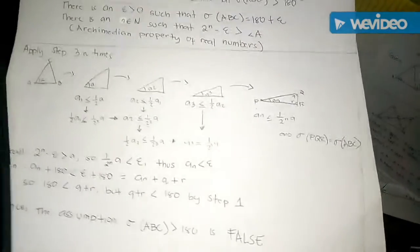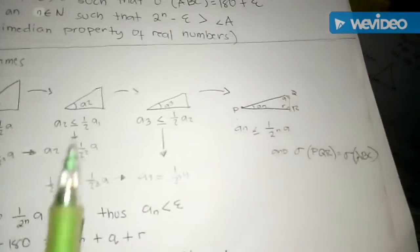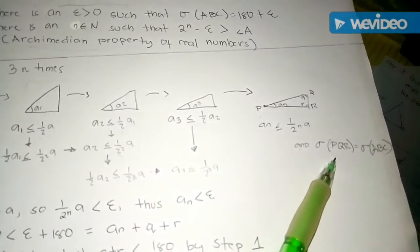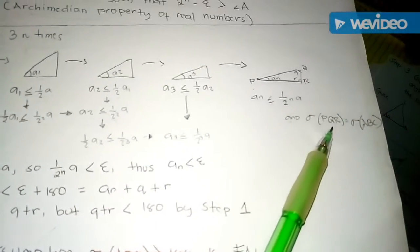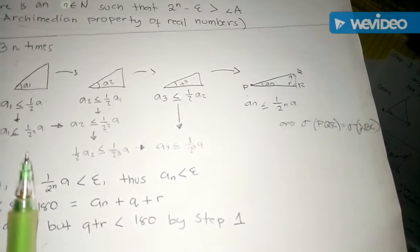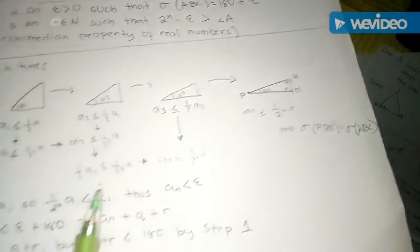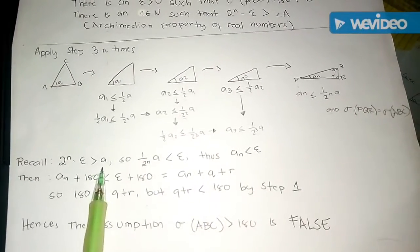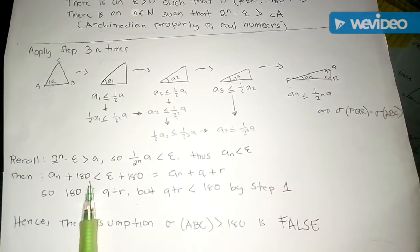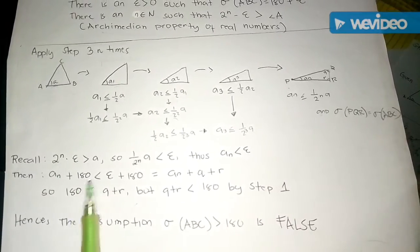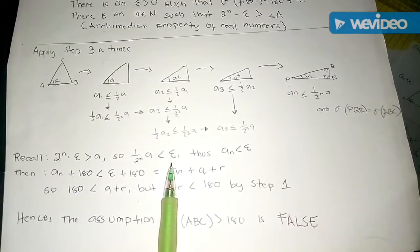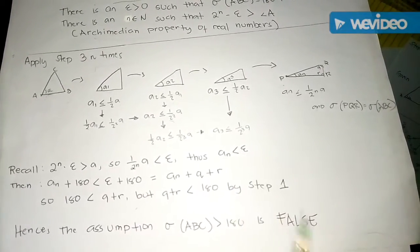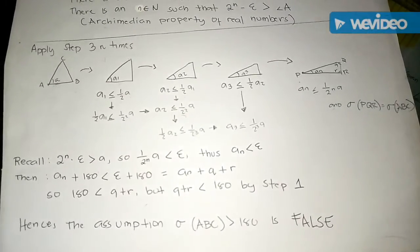Triangle ABC had angle sum 180 + ε, so triangle PQR also has angle sum 180 + ε. We can also write σ(PQR) = Aₙ + Q + R. We chose n so that 2ⁿ · ε > angle A, which by algebra means 1/2ⁿ · angle A < ε. By transitivity, Aₙ ≤ (1/2ⁿ) · angle A < ε, so Aₙ < ε.